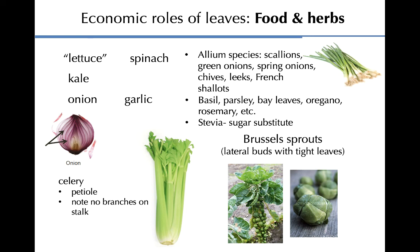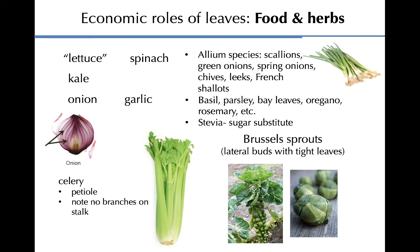Leaves also have important economic roles. They can be eaten — specific examples include lettuce, kale, spinach, celery (which is actually a leaf: a tiny stem, enlarged petiole, and blade at the end), onions, garlic, and allium species like scallions, leeks, and chives. Herbs like basil, parsley, oregano, rosemary, and bay leaves are all leaves. Stevia — a sweet sugar substitute — comes from a leaf. Brussels sprouts are leaves: they're axillary buds with tight leaves forming around them.